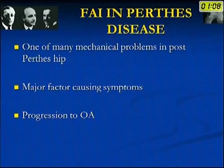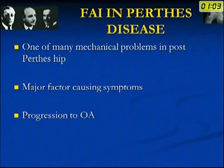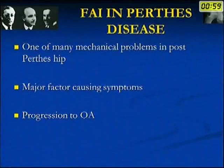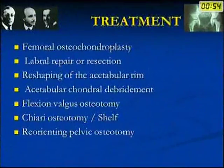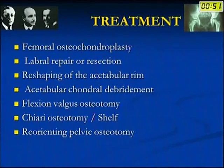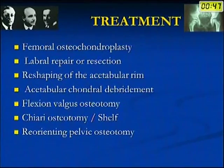Femoroacetabular impingement is one of the many mechanical problems in the post-Perthes hip and is a major factor causing symptoms and progression to osteoarthritis. Both cam and pincer types of impingement are seen in Perthes. Various treatment modalities are followed, though I don't have personal experience with these procedures.